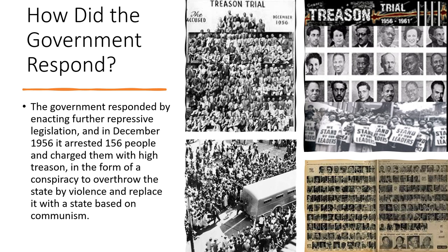Although the ANC and its allies in the Congress movement were all male-dominated organizations, women like Lillian Ngoyi and others had formed the Federation of South African Women, which organized protest against the government's decision to extend the pass laws to African women. The demonstrations culminated on August 9, 1956, when 20,000 African women assembled outside the Union Buildings — the national administrative headquarters in Pretoria — and delivered a petition to the empty prime minister's office, standing in silence for 30 minutes. Two years later, the police arrested 2,000 African women for refusing to accept the passes. Nevertheless, the government stood by its decision, and from 1961 African women were obliged by law to carry passes.